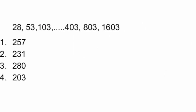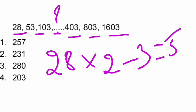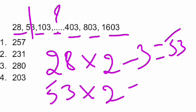Next question: the series is 28, 53, 103, ___, 403, 803, 1603. Here, 28 × 2 = 56, and 56 − 3 = 53. So the pattern is: first number × 2 − 3 gives the second number. Similarly, 53 × 2 − 3 = 106 − 3 = 103. Now applying the same to get the missing number: 103 × 2 − 3.